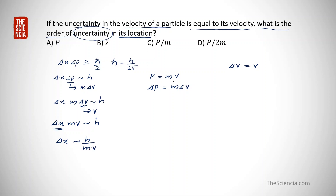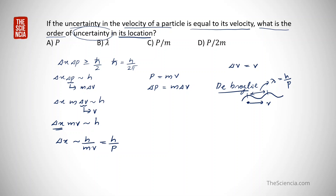Since mv equals momentum p, we have delta x approximately equal to h by p. Recalling de Broglie's theorem: for a particle moving with velocity v, there is an associated wave function, and the wavelength is given by lambda equals h by p. Therefore, h by p equals lambda, and we get delta x equals lambda — the uncertainty in position equals the de Broglie wavelength.